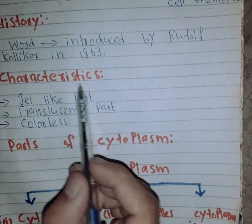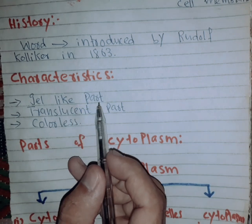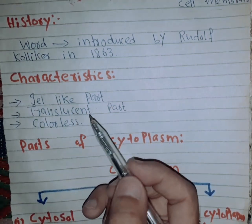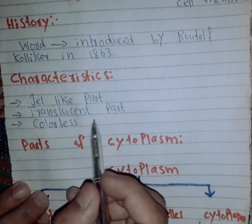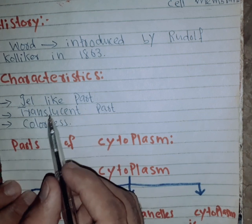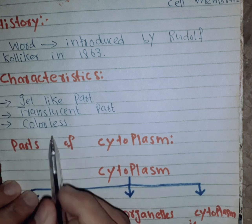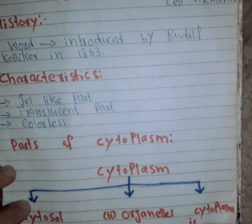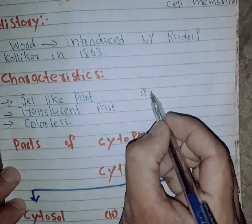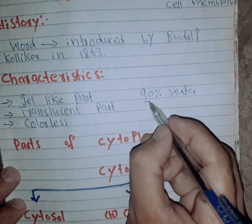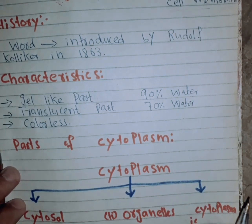The characteristics — meaning the properties — of cytoplasm: cytoplasm is a light, colorless substance. This is the color of cytoplasm.